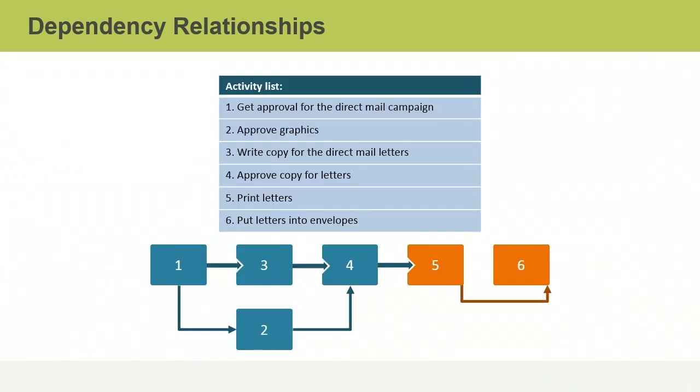In a schedule network diagram for the direct mail campaign project, you start by showing the finish-to-start relationships between activity 1 and activities 2 and 3. Because there's no dependency between activities 2 and 3, no arrow links the nodes for these two activities.